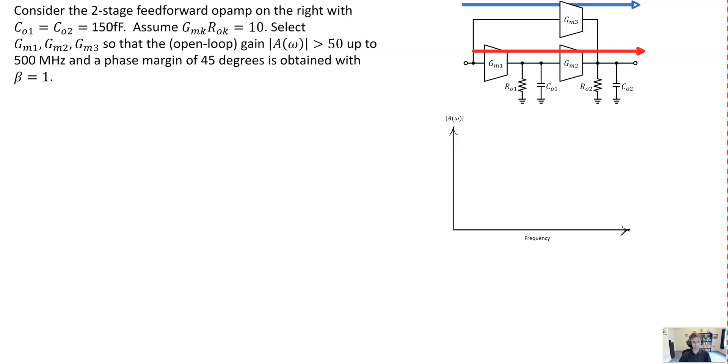We're asked to consider the simple two-stage feedforward op-amp shown on the right here. These capacitances CO1 and CO2 are fixed at 150 femtofarads. The intrinsic gain of these GMRO amplifiers, these transconductance amplifiers, is limited presumably by the technology in which they're implemented to 10. And we're asked to select the transconductances required to ensure that the open loop gain is at least 50 up to 500 megahertz and a phase margin of 45 degrees is obtained.